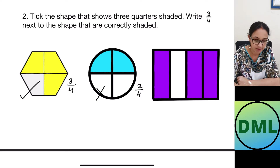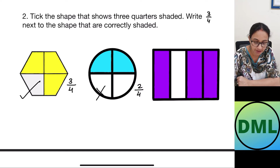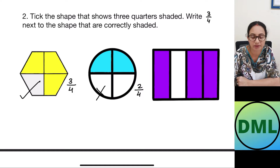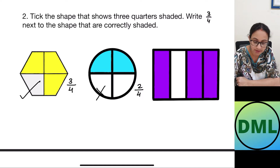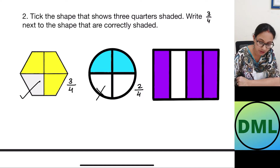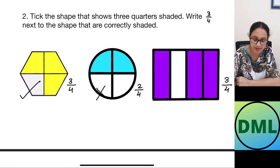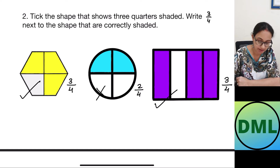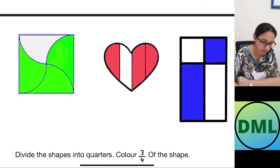Let's look at the next shape — this is the rectangle. I have divided it into one, two, three, and four parts. Are the parts equal? Yes, all the parts are equal. How many parts are shaded? One, two, and three — three parts are shaded. So this figure is out of four parts, three parts are shaded — three by four. This is my answer.